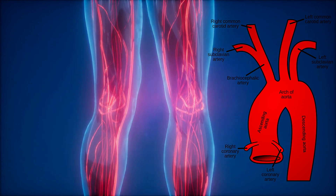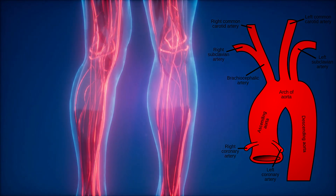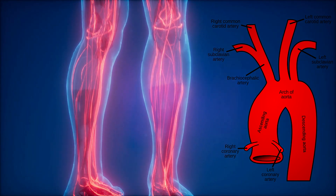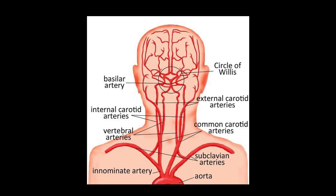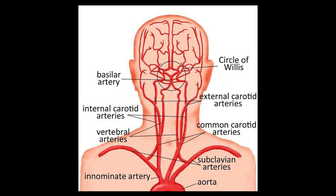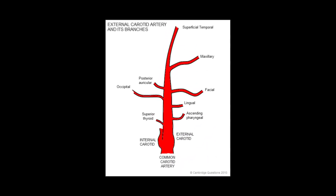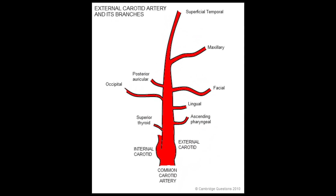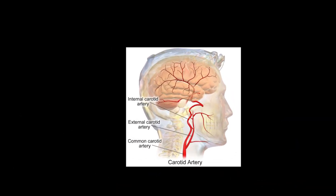The external carotid artery is a major artery of the head and neck. It arises from the common carotid artery when it splits into the external and internal carotid artery. The external carotid artery supplies blood to the face and neck.